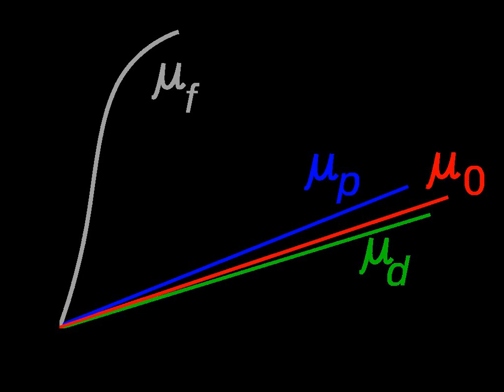Unlike ferromagnets, paramagnets do not retain any magnetization in the absence of an externally applied magnetic field, because thermal motion causes the spins to become randomly oriented without it. Thus the total magnetization will drop to zero when the applied field is removed. Even in the presence of the field there is only a small induced magnetization because only a small fraction of the spins will be oriented by the field.